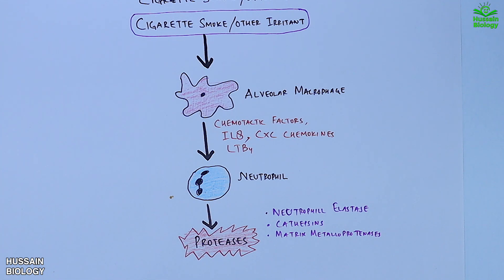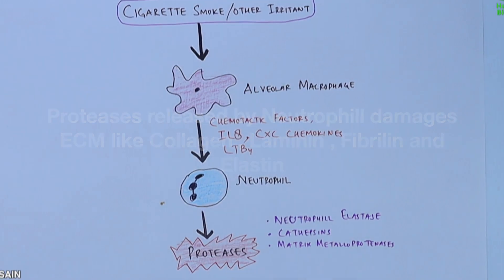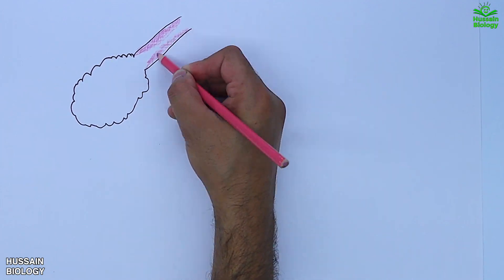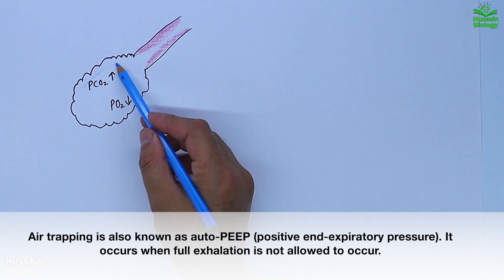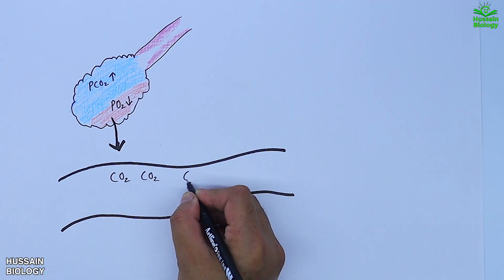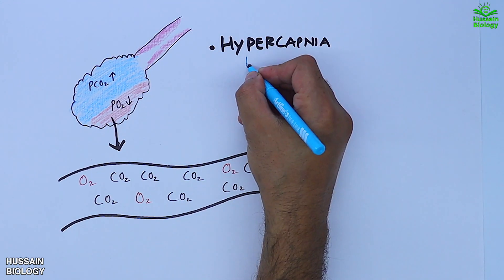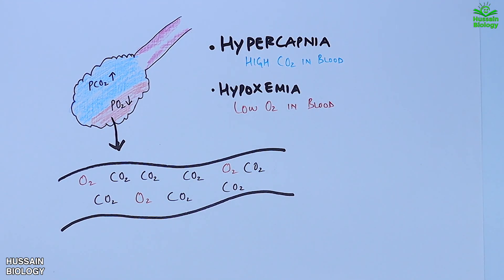Neutrophil elastase, cathepsin G, and PR3 protein are all capable of damaging ECM components such as collagen, laminin, fibronectin, and elastin, resulting in destruction of lung tissue. The inflamed alveoli with hypersecretion of mucus cause trapping of CO2, increasing partial CO2 and decreasing partial oxygen. This results in high CO2 and low oxygen levels in blood capillaries, leading to hypercapnia, hypoxemia, and cyanosis.